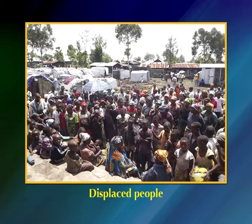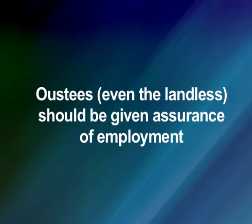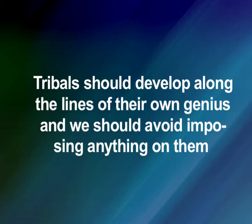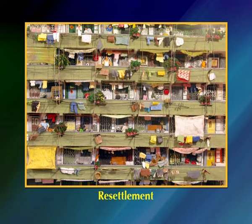The objectives of rehabilitation should be: the displaced people should get an appropriate share in the fruits of development; creating new settlements with their own environment should rehabilitate them; removal of property should also be an objective of the rehabilitation policy, and therefore some land should be given to all oustees — even the landless — with assurance of employment. Tribals should develop along the lines of their own genius, avoiding imposing anything on them. Resettlement should be in the neighbourhood of their own environment in partly affected villages.